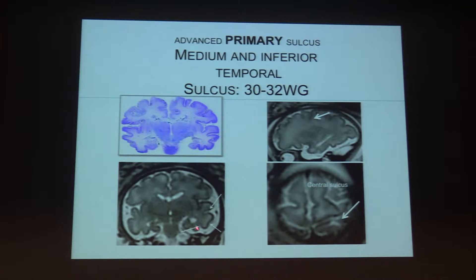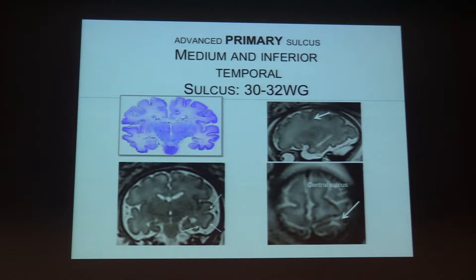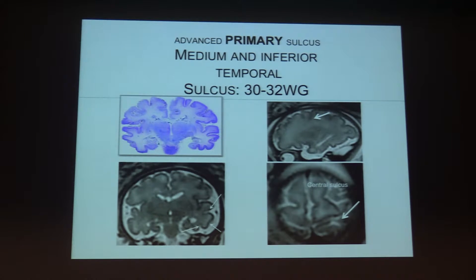When interpreting MRI, the first thing is to be sure that all the sulci are present and correspond to the term at which the MRI was performed. After 30–32 weeks of gestation, we have inferior temporal fissures and the development of secondary and tertiary fissures. For primary fissures, all individuals share the same pattern without variation, but for secondary and tertiary fissures there is high variability between people.